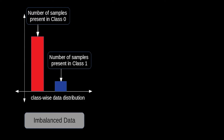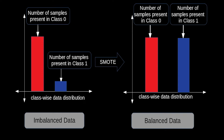Consider an example of an imbalanced dataset where the class-wise data distribution is not equal. The number of samples in class 0 is comparatively higher than in class 1. After applying SMOTE, we have balanced data — the number of samples in class 0 and class 1 are now the same.